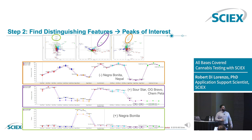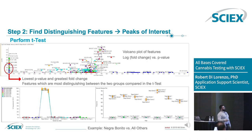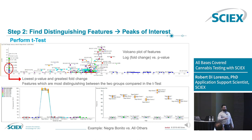When we dive into this data, we can see that whatever this compound is, it's upregulated in the Negra Bonita strain. Over here we can see these compounds are upregulated in Sour Star and OG Bravo campita, and things that are downregulated in certain strains. We can also look at T-tests rather than PCA plots and look at features that have a really large fold change versus various different sample sets and a really strong P value — differing greatly with a high degree of statistical significance.